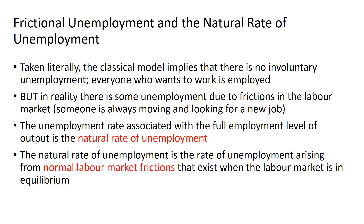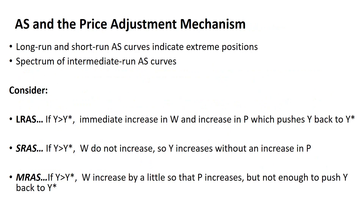What I suggest you do is watch the first video with respect to session 11 and 12 before moving on to this one. What we are going to be looking at here is aggregate supply and the price adjustment mechanism. You need to recall the difference between the Keynesian and the classical long-run and short-run aggregate supply curves, because these are really extreme positions in terms of where the economy can be with respect to producing output.